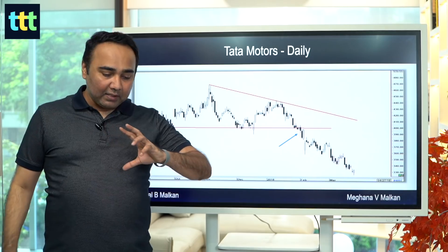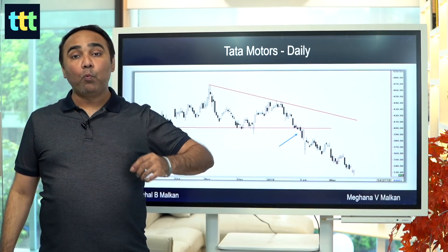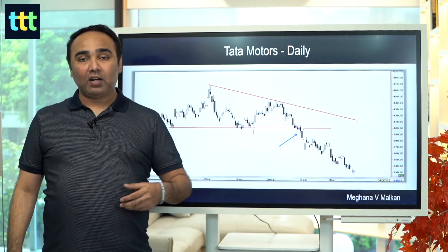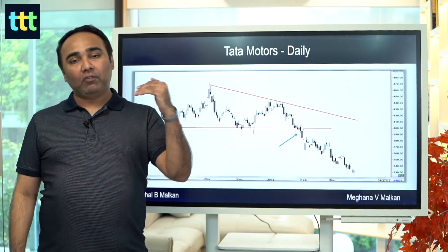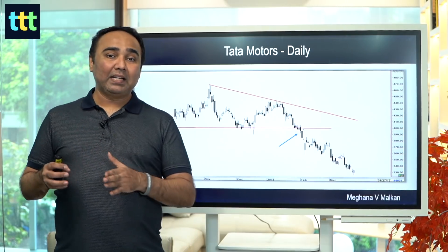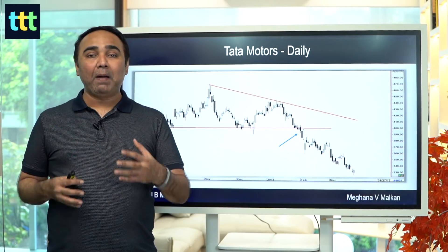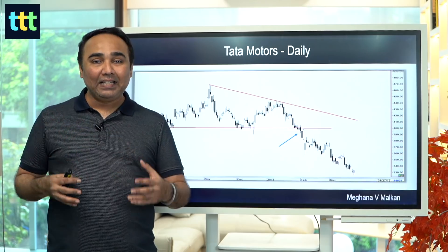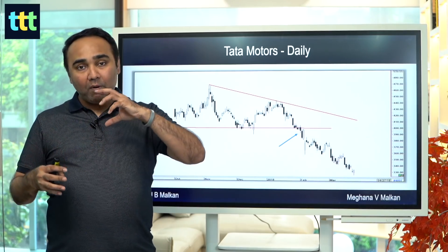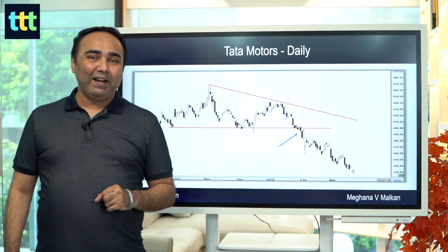There are some different kinds of triangles called wedges — upward wedge, rising wedge, or falling wedge. Maybe I can do a separate video on that because the properties and patterns are slightly different there. We will talk about wedges in a different video.